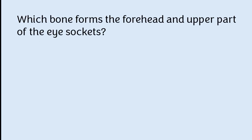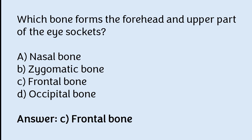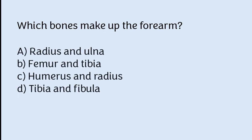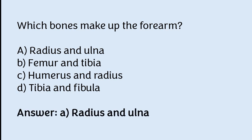Which bone forms the forehead and upper part of the eye sockets? Nasal bone, zygomatic bone, frontal bone, or occipital bone. The correct answer is option C — the frontal bone forms the forehead and upper part of the eye sockets. Which bones make up the forearm? Radius and ulna, femur and tibia, humerus and radius, or tibia and fibula. The correct answer is option A — radius and ulna bones make up the forearm.